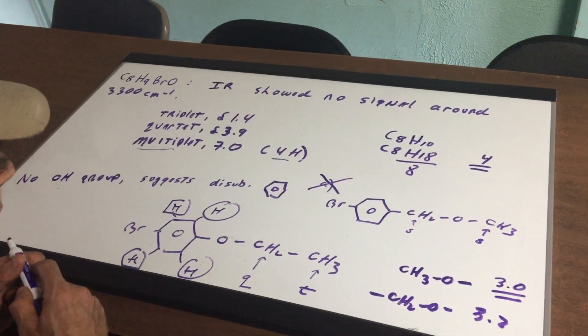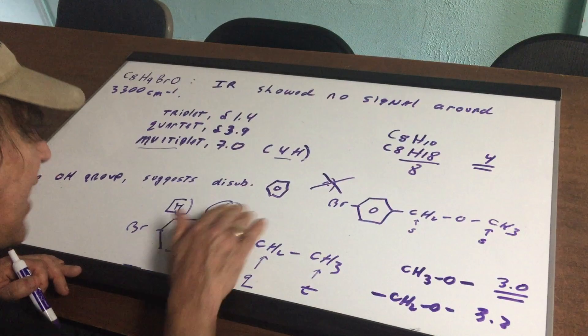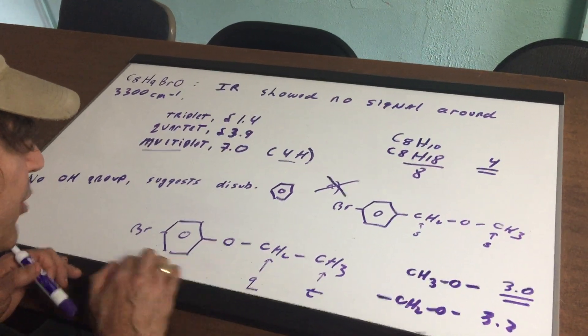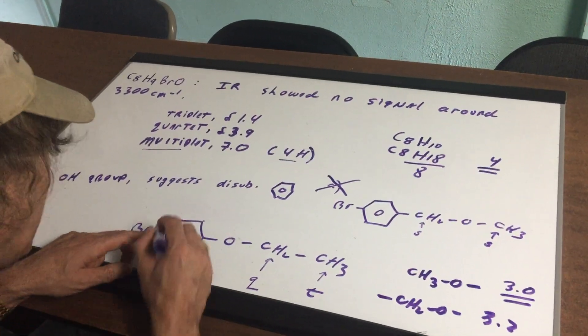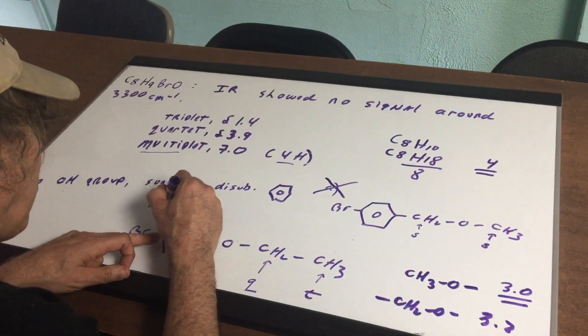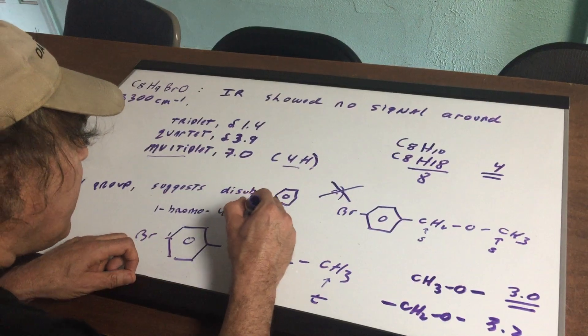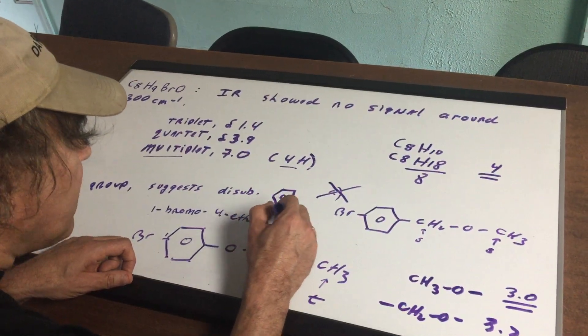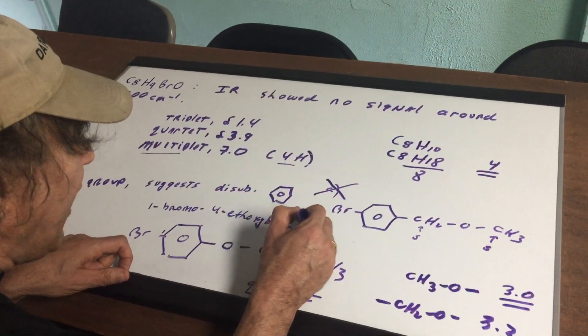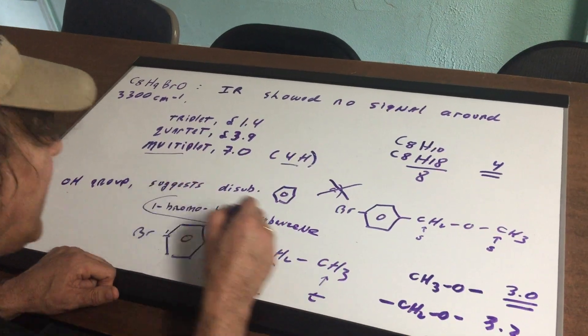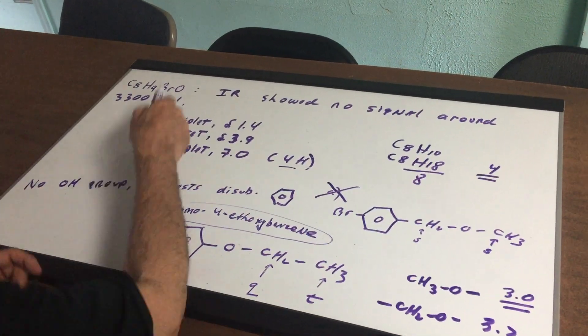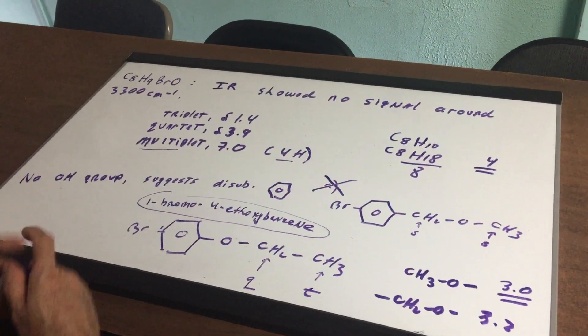There's the triplet, and there's the quartet. If I get these H's out of here, just to make it look a little prettier, and we do the final name of this compound. I'm going to call this 1-bromo-4-ethoxybenzene. So I think that this would be a mighty fine candidate for this data that was given.